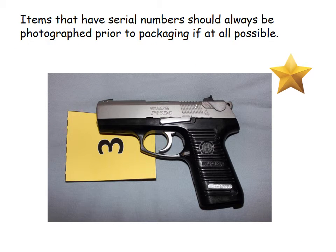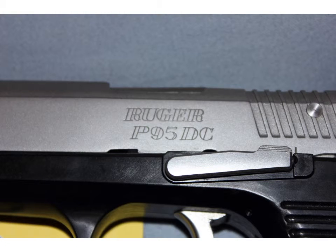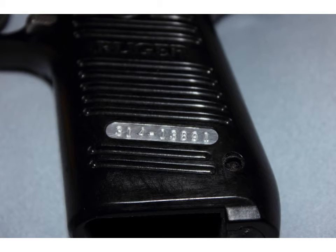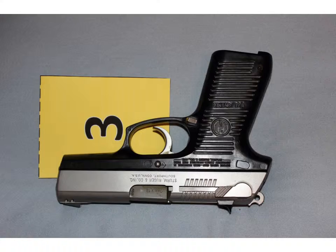Items that have serial numbers should always be photographed prior to packaging if at all possible. We want to keep the evidence as pristine as possible. Once you put it into a bag — even a plastic bag you can see through — you're going to have to handle it and scrunch that plastic down to look at serial numbers. So it's always a good idea to take as many photographs of the details on an item, like a serial number, prior to packaging so you don't have to keep manipulating that item. Here are close-up shots showing the make and model of the gun, the serial number on the gun, and the reverse side of the gun showing other details.